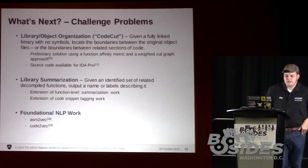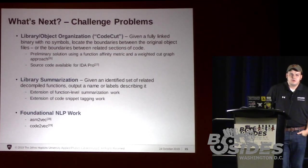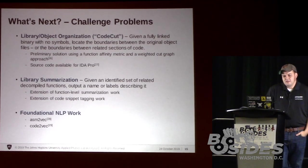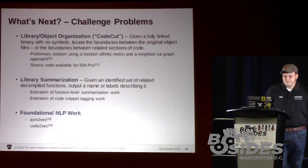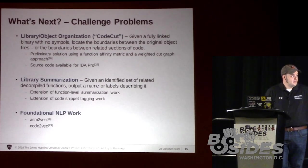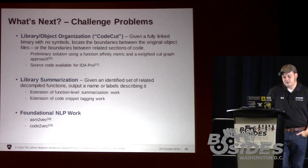Next is something I call the code cut problem, which I've worked on myself — you can check out my GitHub repo, reference 27. We've come up with a preliminary solution. The idea is: given a binary, the way large binaries work is different source files get compiled into object files, all get linked together, and all information about object file boundaries gets removed. Given a binary, locate the original object file boundaries within it to give an idea of clusters of related functions.